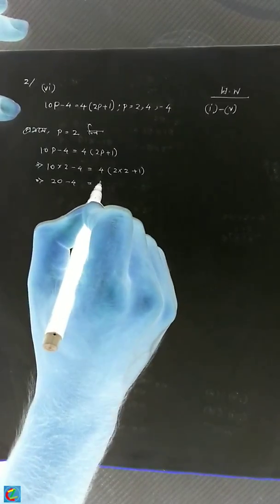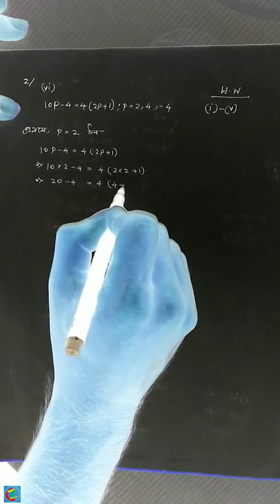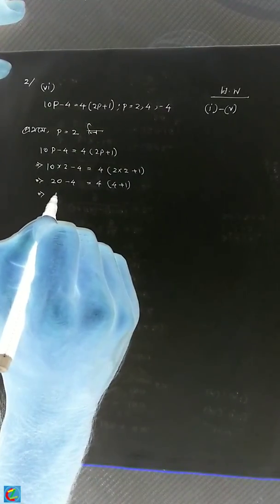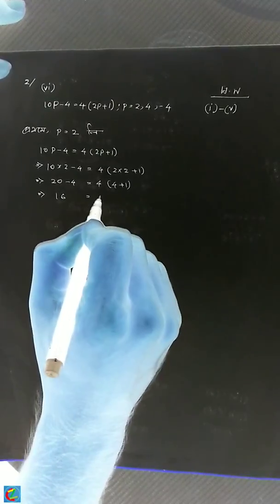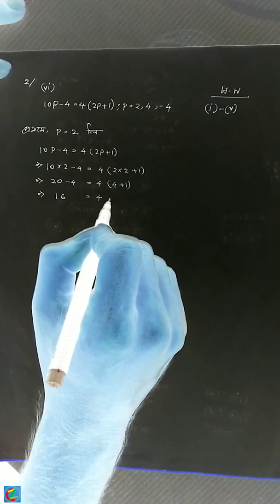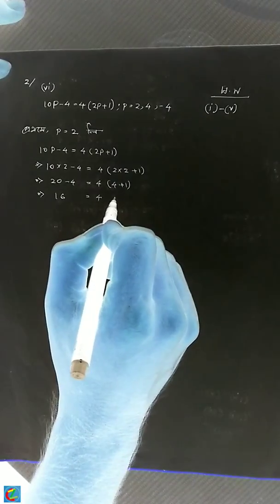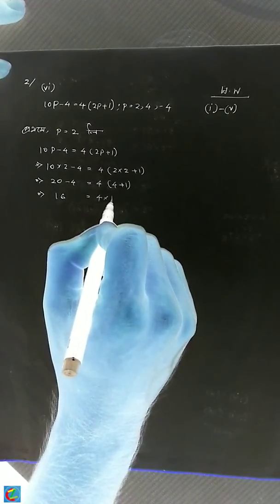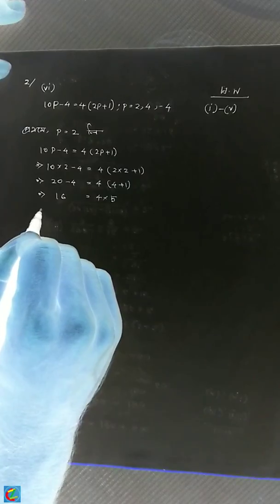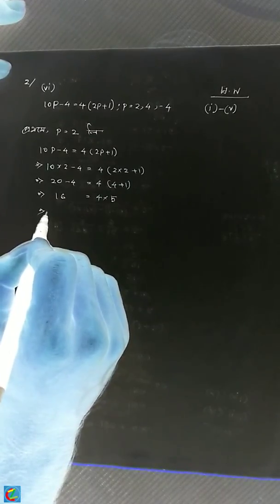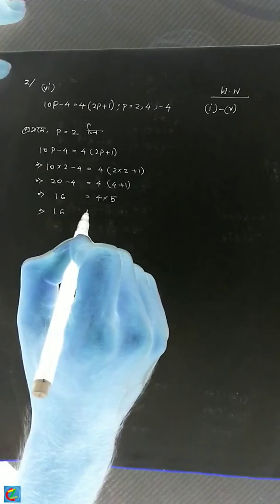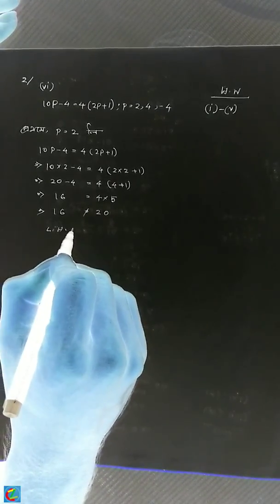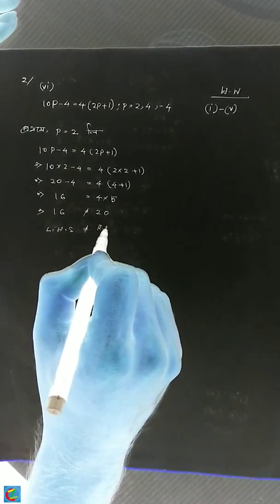10 into 2 is equal to 20p, minus 4 is below 4. That becomes 16. 5 into 4 is equal to 20. As you can see here, it is left-hand side and right-hand side.